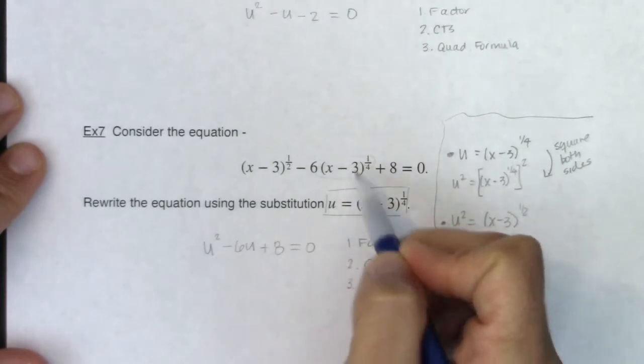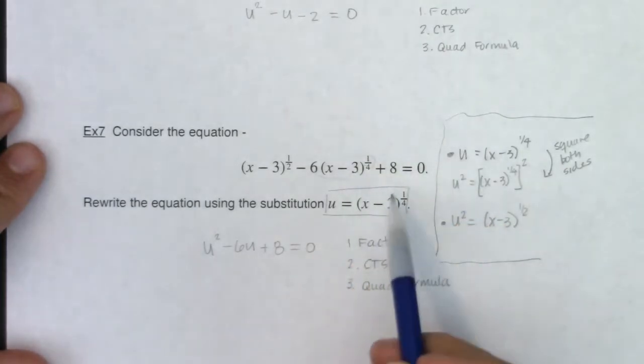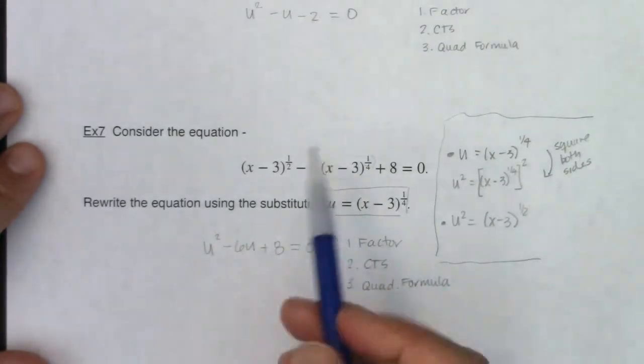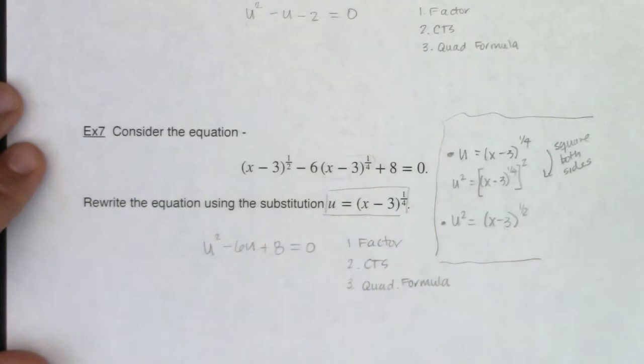So you want to pick whatever this middle term is and that will become your u substitution. And then this process only works if this exponent happens to be twice this exponent. And that won't always be the case. If it's not then you can't use this method, but if it is you can use this method.